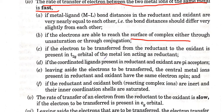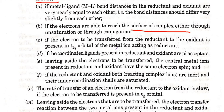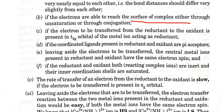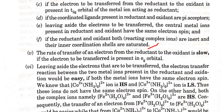Additionally, the rate is fast if the electrons to be transferred are present in the T2g orbital of the metal ion acting as the reductant. Also, if the coordinated ligands in the reductant and oxidant are pi acceptors, and if the central metal ions in the reductant and oxidant have the same electron spin. Finally, if both the reductant and oxidant are inert and their inner coordination shells are saturated, then the rate of reaction will be fast under all these conditions.